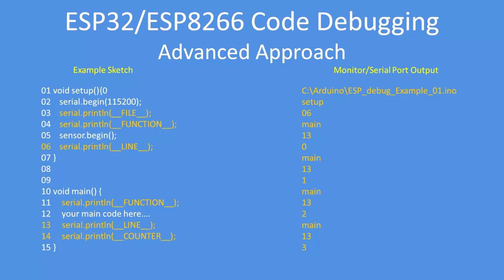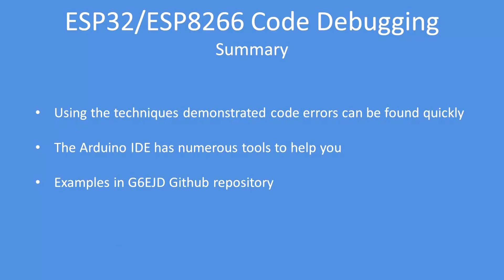Here I'm now using some of those more advanced functions to debug a program. It's a simple program: setup sets up a serial port, tells me what the file name is, what the function is, where the line is, and where it finishes setup. Then for the main loop it tells me the function, the line number, and the counter. You can see it displays the file name and all the requisite lines and function names as they get called.